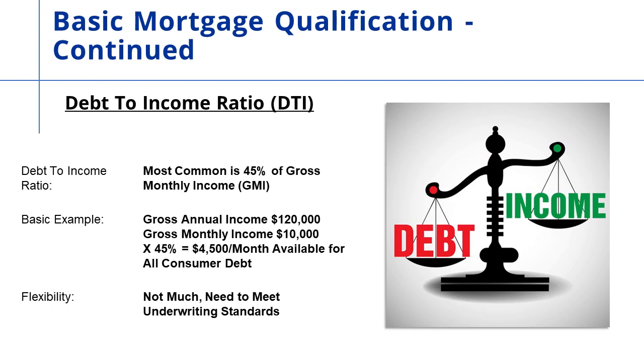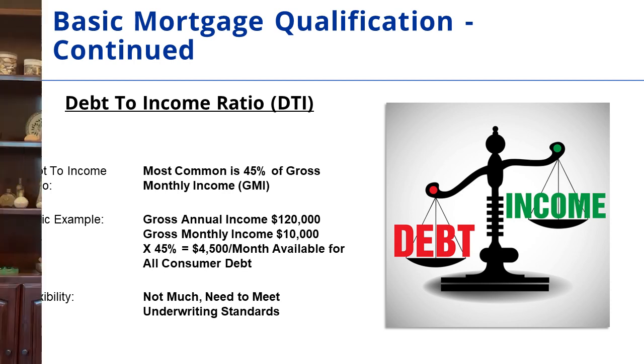At 45%, at $120,000 a year — $10,000 a month — that's $4,500 a month for debt service for all consumer debt. There's not a lot of flexibility. Lenders realize that if your debt structure gets too high, it's very hard to stay afloat financially. The only exception is as incomes get very high, we can push that ratio higher, simply because basic costs of living — a pickup truck or a hamburger — don't cost more for a millionaire than for someone who makes less.